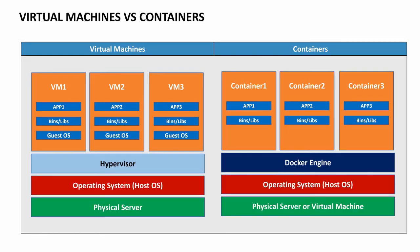Here is a comparison diagram between virtual machines and containers. On the left side, it shows a hypervisor where every guest VM has a complete operating system. On the right side, there is a physical server or virtual machine with a Docker engine, where every container has just the bins and libs necessary for an application.